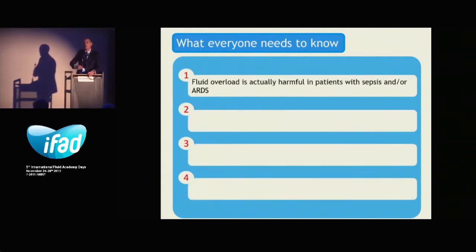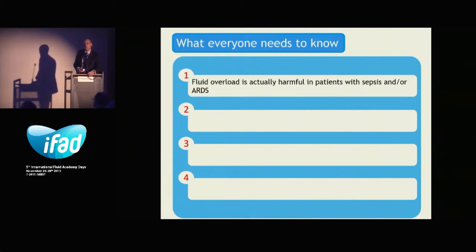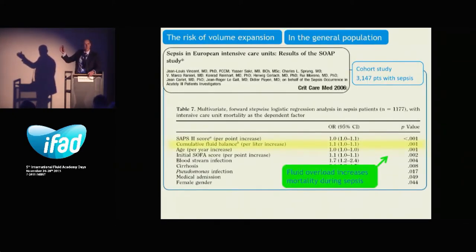Among the important messages, the first one is that fluid overload is definitely harmful in patients with sepsis and with ARDS. Many studies today demonstrate that overloading our patients with sepsis and ARDS kills our patients. The SOAP cohort — more than 3,000 patients — showed that cumulative fluid balance was an independent predictor of mortality. The more fluid you give those patients, the more they die.